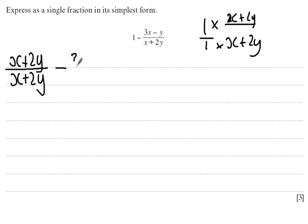So then I've got minus 3x minus y over x plus 2y. Now, you can put this straight over one denominator if you want to. I'm just choosing to emphasize the fact that 1 has been rewritten as a fraction with x plus 2y as the denominator.